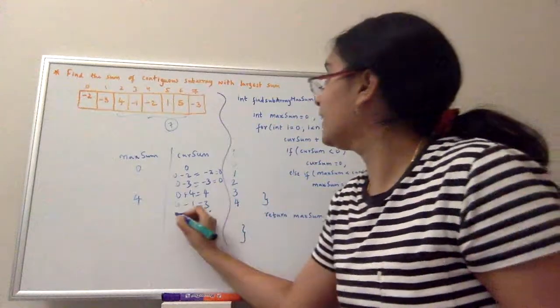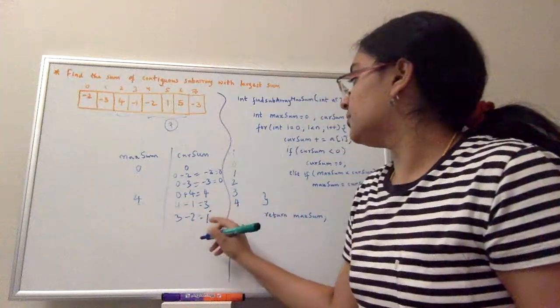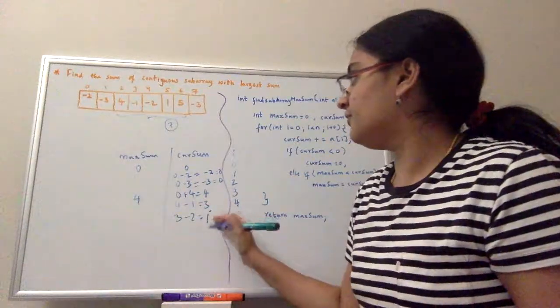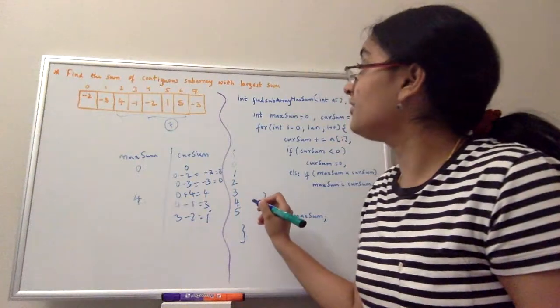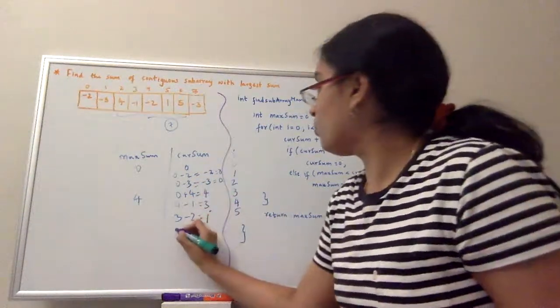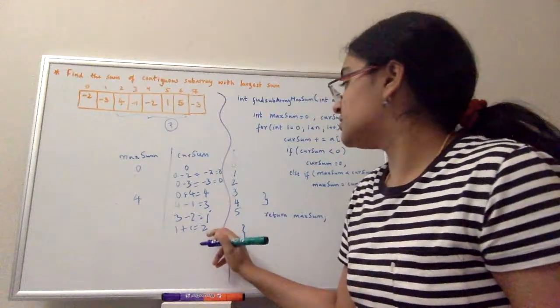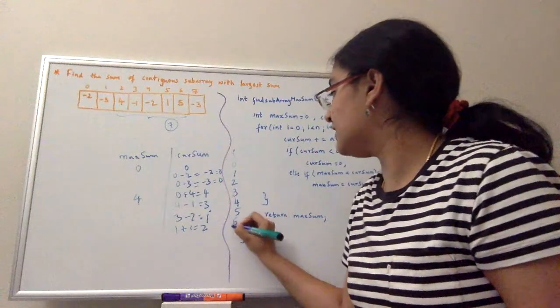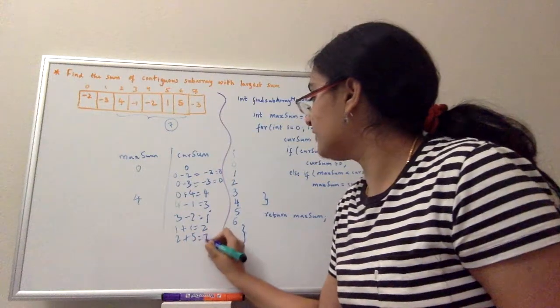i is incremented and 3 minus 2 equals 1. Current sum is less, so we don't change. We will not assign it to maximum. So then i value is 5. So 1 plus 1 is 2. Still 2 is less than 4 so we don't change it. So i value is 6. Then 2 plus 5 is 7.